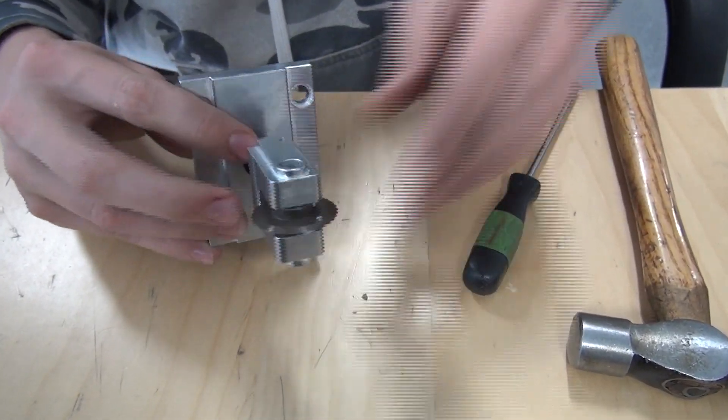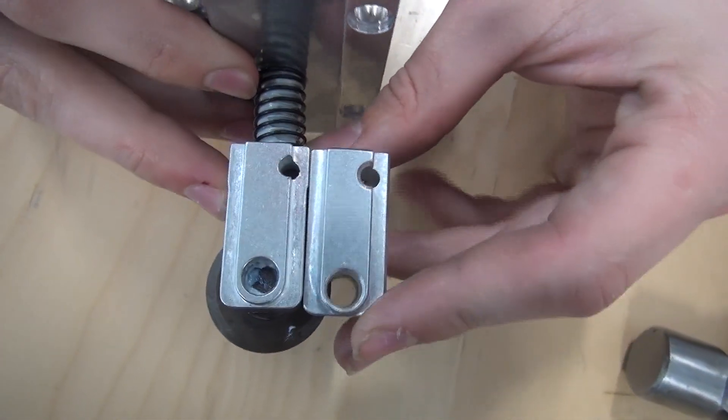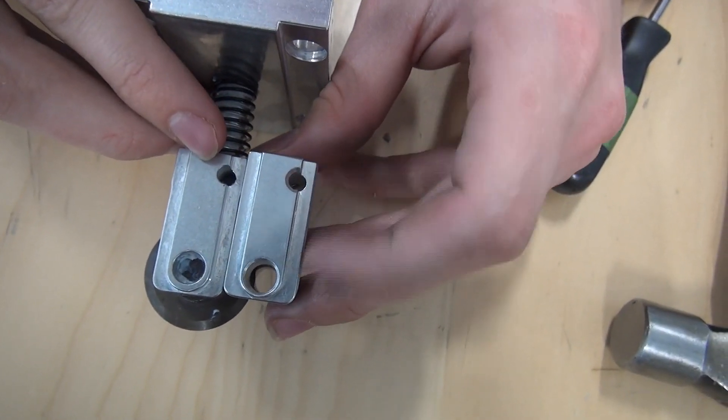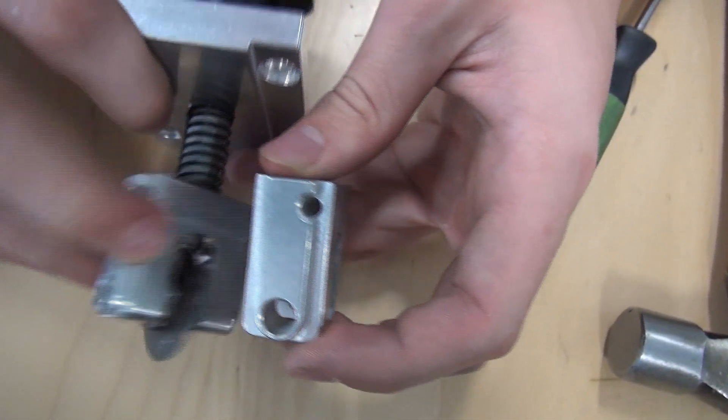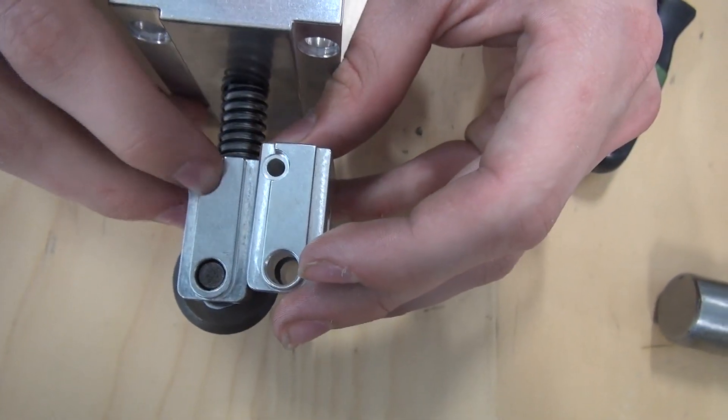So there are two different styles that have been produced. There's a side that has a small hole and there's a side that has a big hole and a notch.